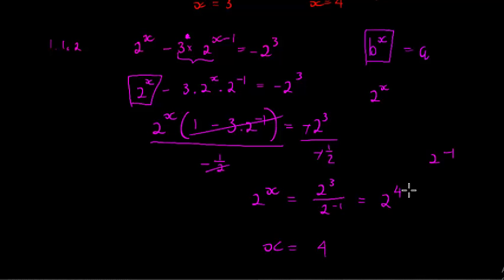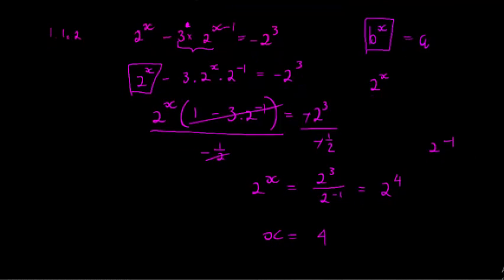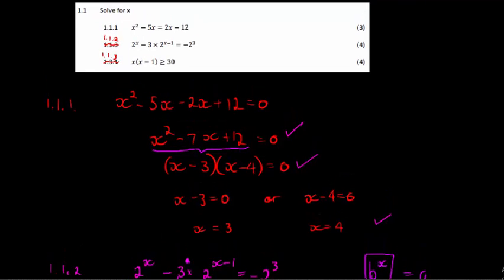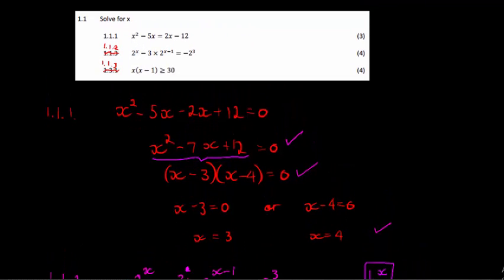If you didn't use your calculator, you would have gotten 2 to the power of X is equal to 16, and then you could have also said, oh I know what exponent I must give 2 to make it equal to 16. I must say it's 2 to the power of 4. So if 2 to the power of X is equal to 2 to the power of 4, then X must be 4.